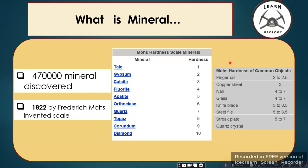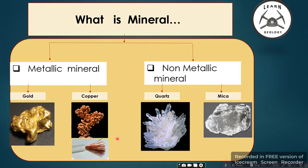He also established that minerals of hardness around 2 to 2.5 can be scratched by a fingernail, 3 by a copper sheet, 4 to 7 by a nail, 4 to 7 by glass, and 5 to 6.5 by a knife blade, and so on.